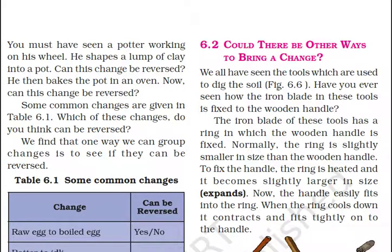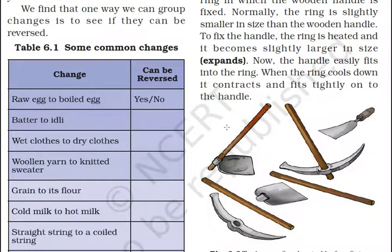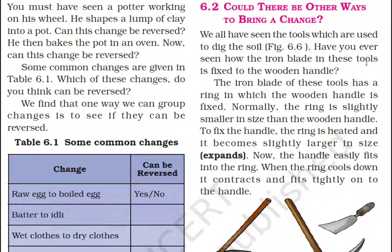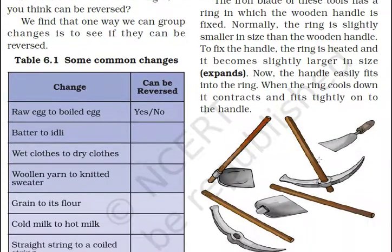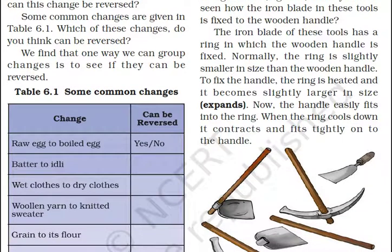We have all seen the tools used to dig the soil. Have you ever seen how the iron blade in these tools is fixed to the wooden handles? The iron blade has a ring in which the wooden handle is fixed. Normally the ring is slightly smaller in size than the wooden handle.